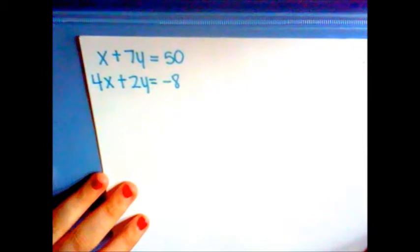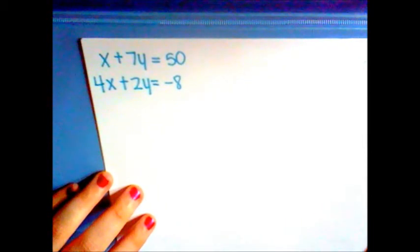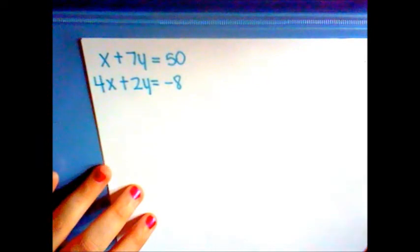Problem number 2. x plus 7y equals 50 and 4x plus 2y equals negative 8.